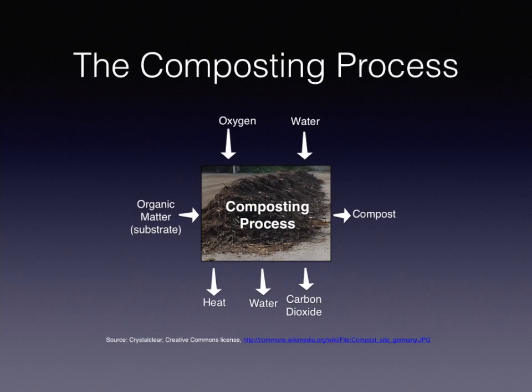The composting process is the combining of organic matter with oxygen and water, which produces the byproducts of heat, water, and carbon dioxide to form the final product of compost. The composting that has transpired over the ages is the same today — what works in the backyard compost pile is the same process when scaled up to the commercial level.